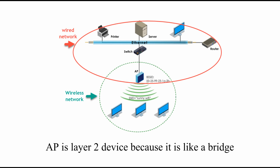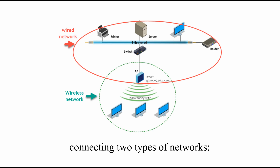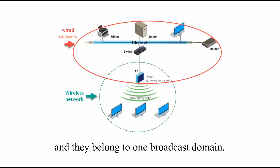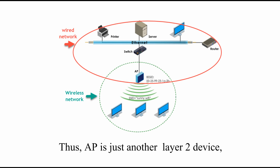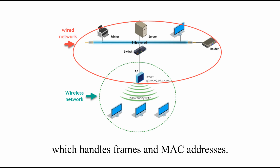AP is a layer 2 device because it is like a bridge connecting two types of networks: wireless and wired. But these two networks are not separate — they belong to one broadcast domain, in other words, one local area network. Thus, AP is just another layer 2 device, like a switch, which handles frames and MAC addresses.